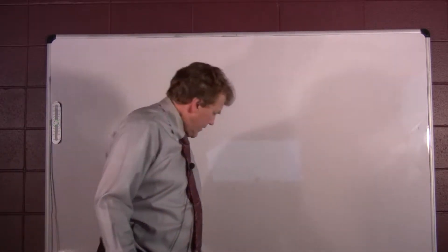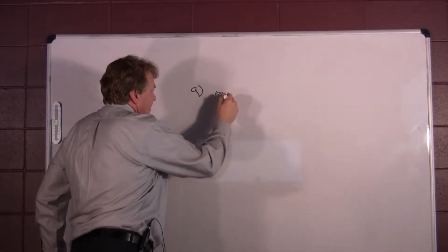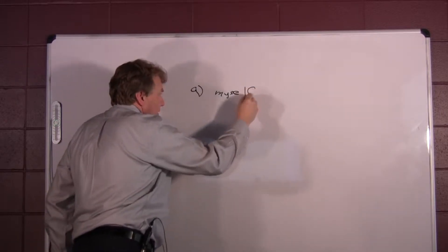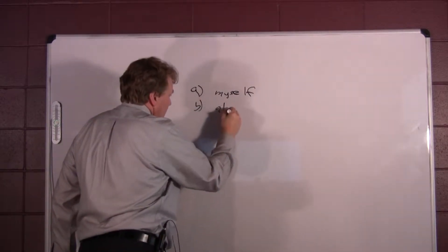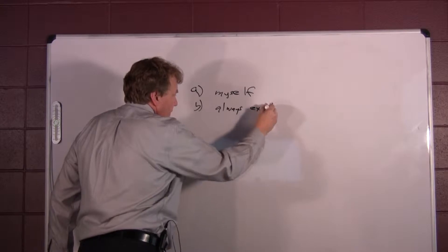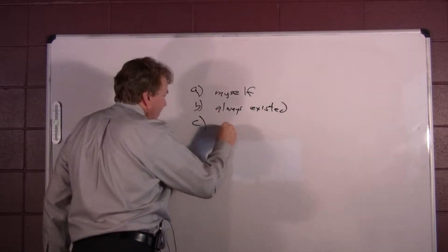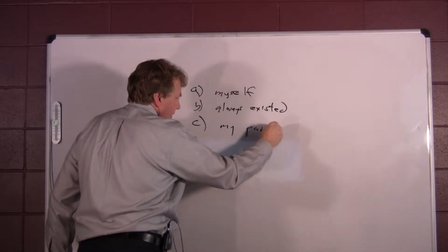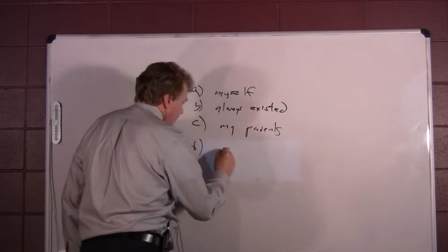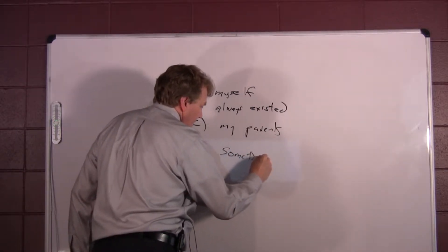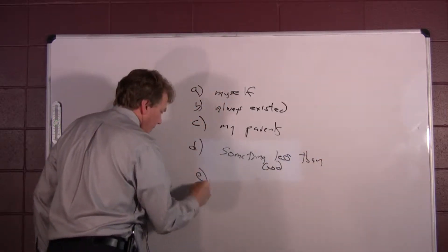I could cause myself, right? That could be possible. One, I could cause myself. I could have always existed. These are the various possibilities, he thinks. I am caused by my parents. Well, of course I am, but is that the ultimate cause of me? Something less than God, I'm caused by something less than God, or the final one would be I am caused by God.